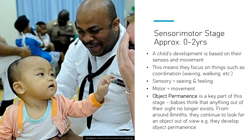A key term you need to know about is called object permanence. Object permanence is the idea that an object is permanent. Babies, before they've developed this ability, when they stop seeing things they actually think it's disappeared. That's why if you've ever played peekaboo with a baby, they think it's the funnest thing in the world — giggling away — they might actually think you've disappeared. As far as they're concerned, you're a magician, because if they can't see you, you're not there.